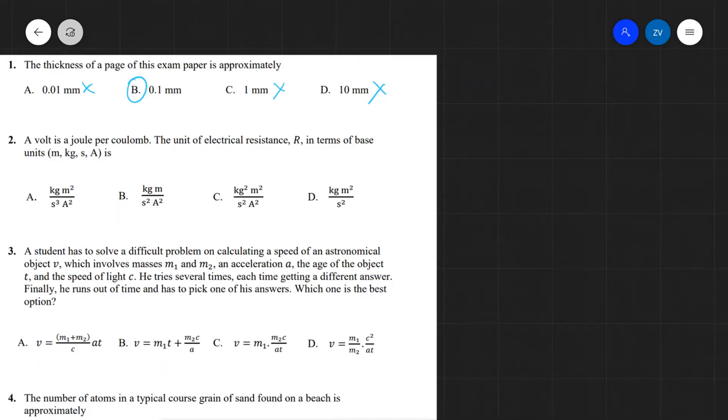A volt is a joule per coulomb. The unit of electrical resistance R, in terms of base units, is? Okay, well, let's just first write down our formula for resistance, and that is V over I. Now the ohm, which is the unit for electrical resistance in terms of base units, this will be equivalent to a joule per coulomb, as we're given over here. So a volt is a joule per coulomb, divided by the current.